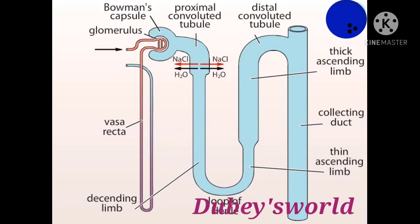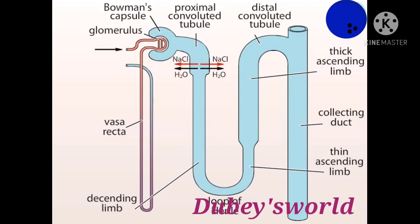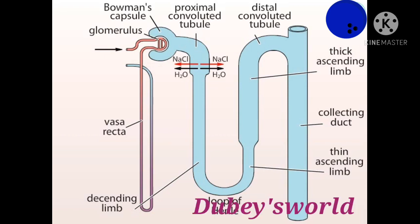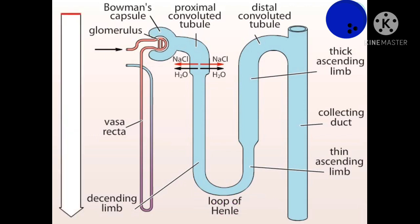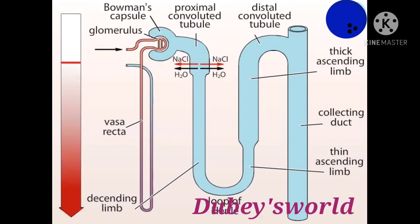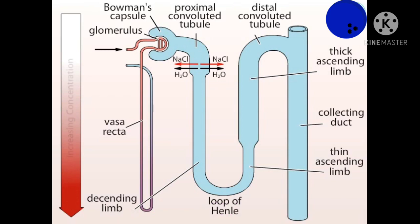Despite the large volume of water and solutes reabsorbed out of the proximal convoluted tubule, the overall concentration or osmolarity of the fluid that enters the loop of Henle is similar to that of the blood plasma, although its composition is quite different. The ability of the kidney to produce urine that is hypertonic to the blood plasma is due to the loop of Henle. The loop of Henle does not concentrate the urine directly. Rather, it functions as a counter-current multiplier, creating a concentration gradient in the surrounding medulla.